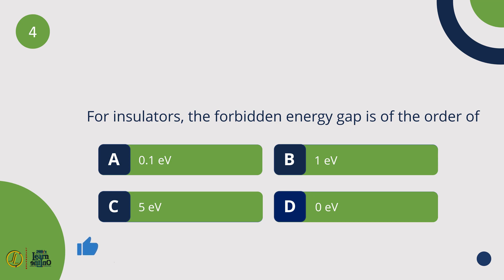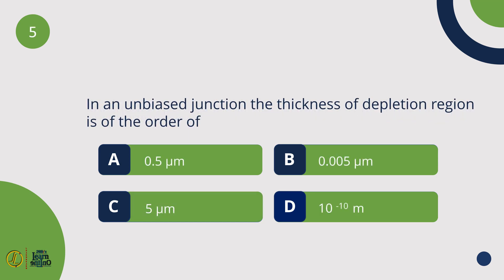For insulators, the forbidden energy gap is of the order of 5 eV. In an unbiased junction, the thickness of the depletion region is of the order of 0.5 micrometers.